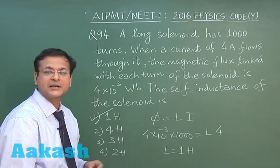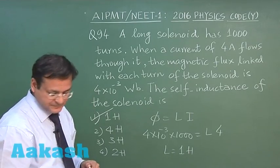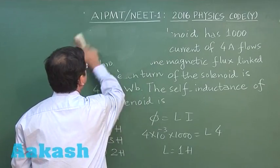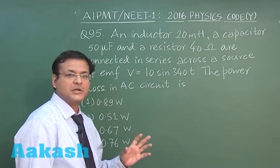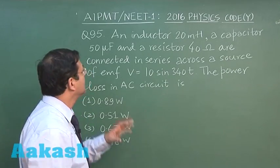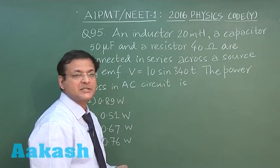Now let us look at next question, that is question 95. This question 95 is based on alternating currents, again a formula based question.